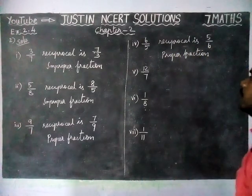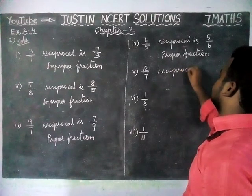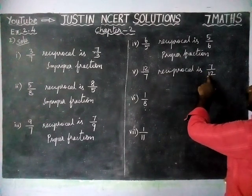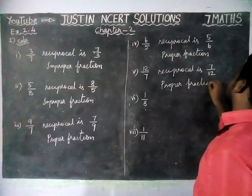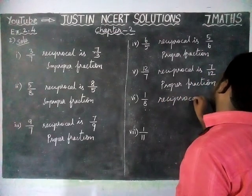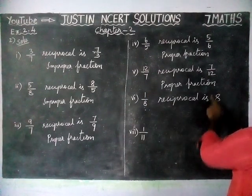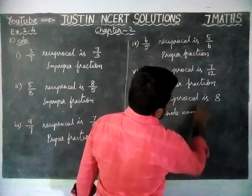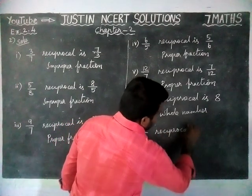Fifth question: 12 by 7. The reciprocal is 7 by 12, and here the numerator is less than the denominator, therefore this is a proper fraction. Sixth question: 1 by 8. The reciprocal is 8 only, because if we write denominator 1, that value is equal to 8 only, therefore 8 is a whole number. Then 1 by 11 — the reciprocal is 11 by 1, which is equal to 11, so 11 is a whole number.